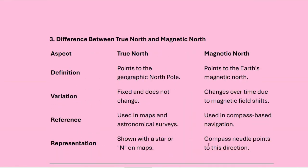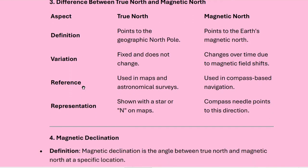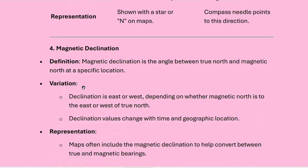The basic difference between true north and magnetic north: in terms of definition, true north points to the geographic north pole, whereas magnetic north points to the earth's magnetic north pole. In terms of variation, true north is fixed and does not change, whereas magnetic north changes over time due to magnetic field shifts. In terms of reference, true north is used in maps and astronomical surveys, whereas magnetic north is used in compass-based navigation. True north is represented with a star or capital N on maps, whereas the magnetic compass needle points to magnetic north.